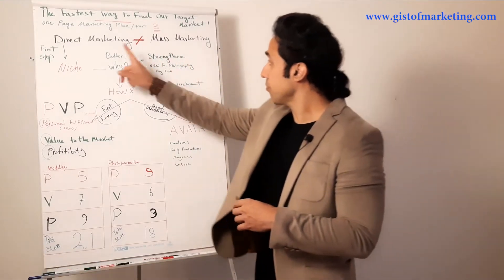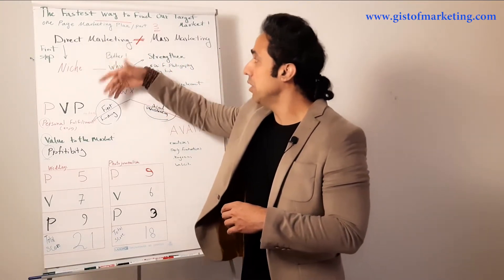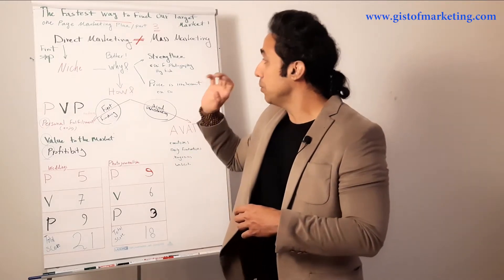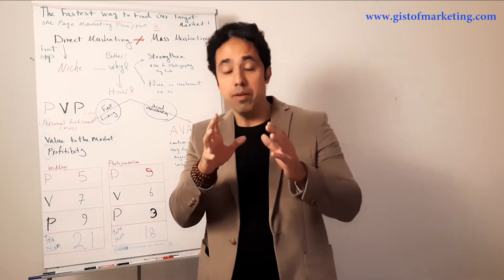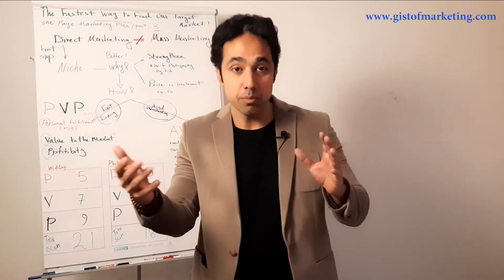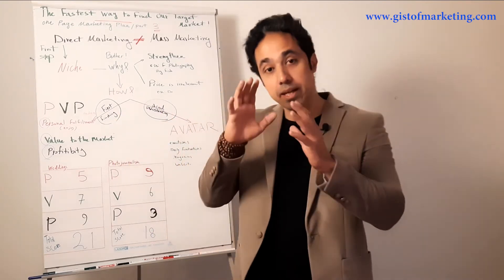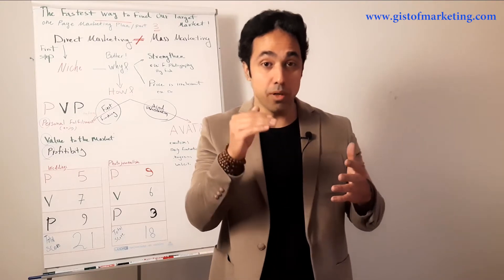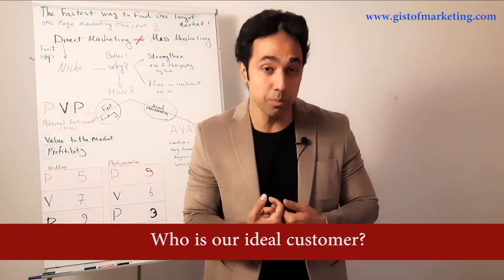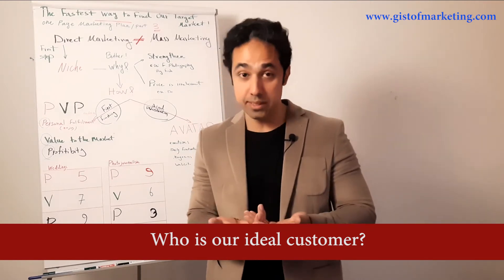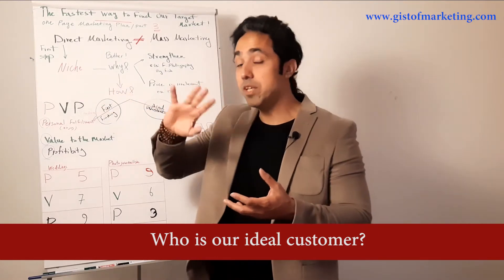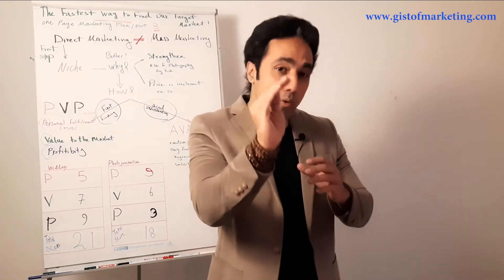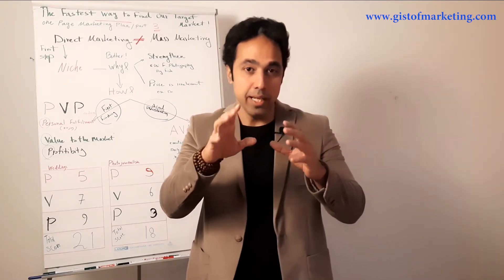Last session we talked about direct response marketing. Today we want to move on to niche or target customer. In marketing, we need to know who our customer is and who our audience is before we go to the next part. In the one page marketing plan, one of the most important parts is finding out who our ideal customer is — to whom we want to offer our product or service. We cannot do mass marketing; we don't want to go for everyone. We want to focus like a sniper on one part of the market that is best for us.